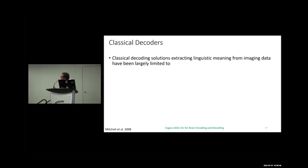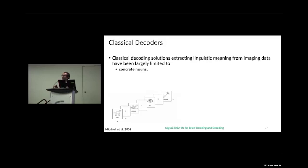In classical decoding works, the focus was on extracting linguistic meaning from imaging data using the Mitchell dataset of 60 concrete nouns — e.g., apartment, dog, bell. For every noun we have an fMRI image, and the 60 concrete nouns are divided into 12 categories (animals, vegetables, etc.). The main focus was just decoding these 12 categories, not the 60 individual nouns.